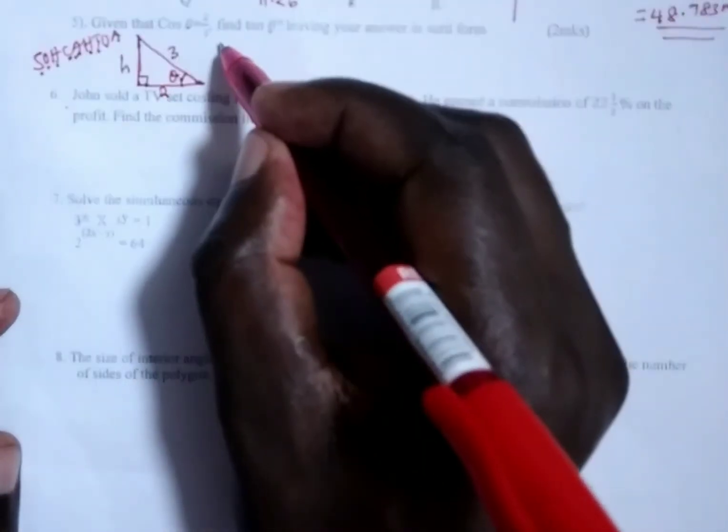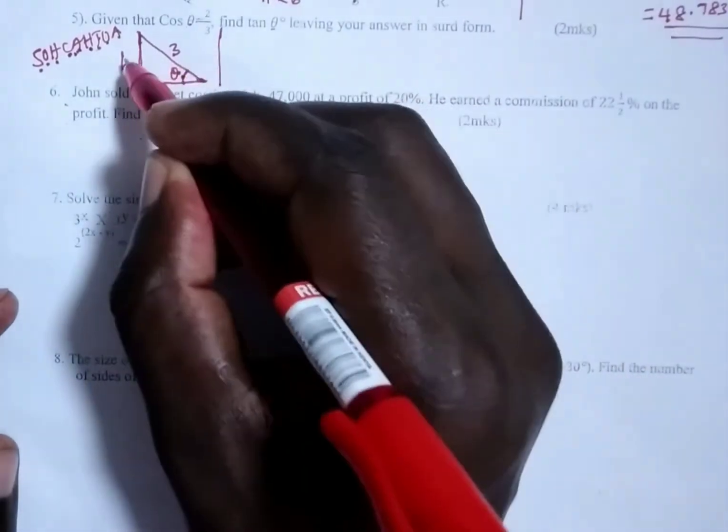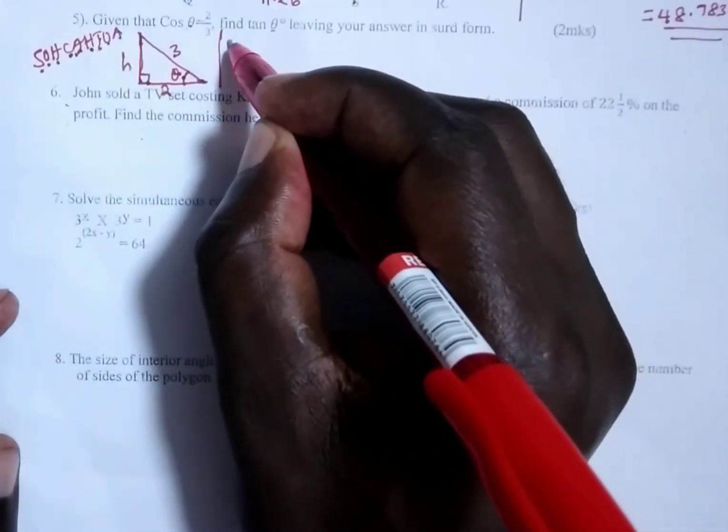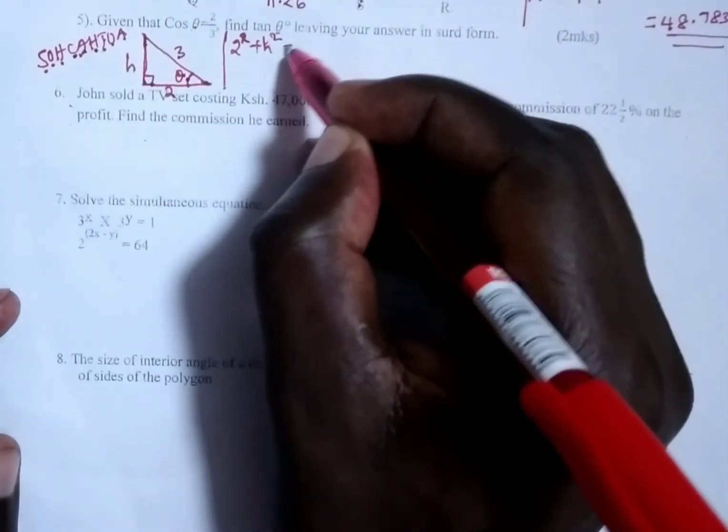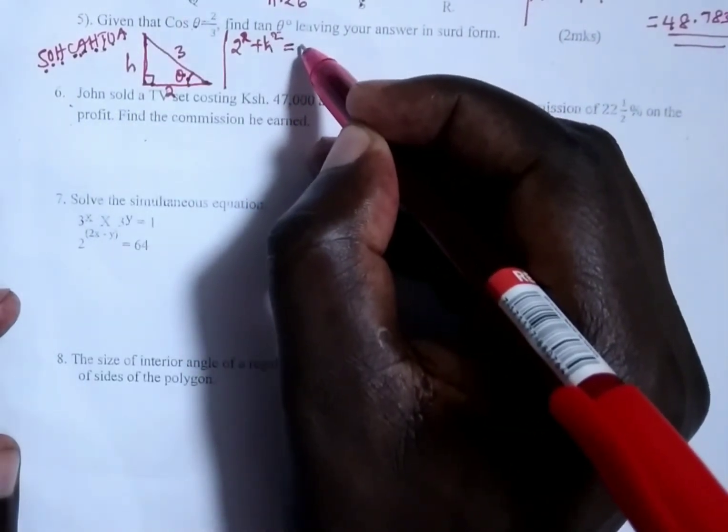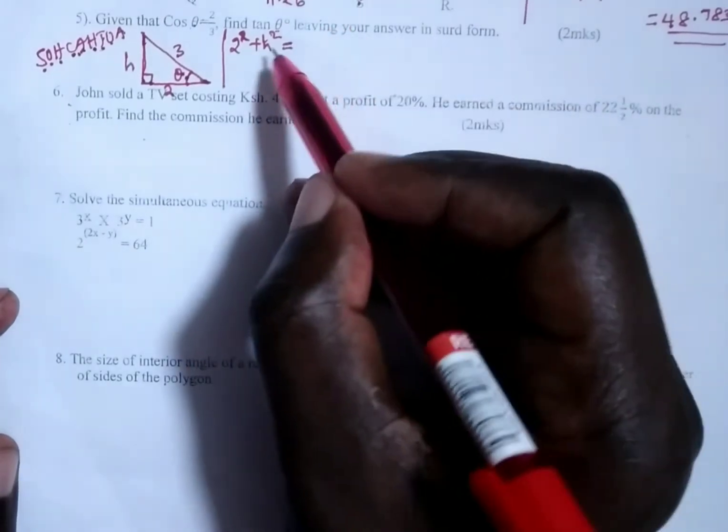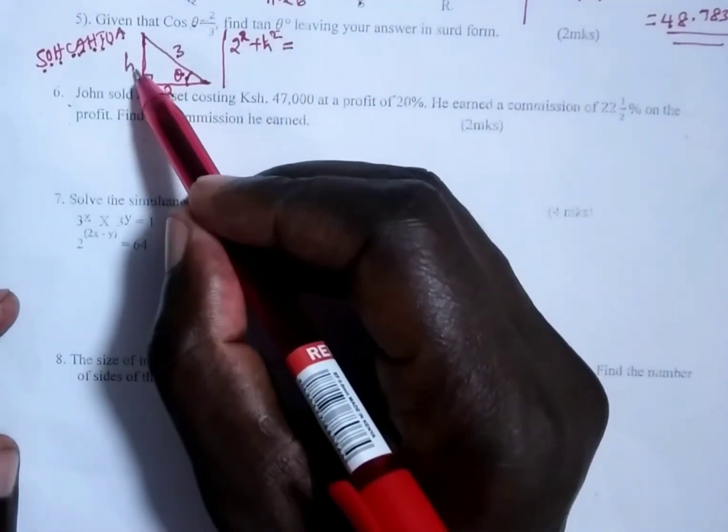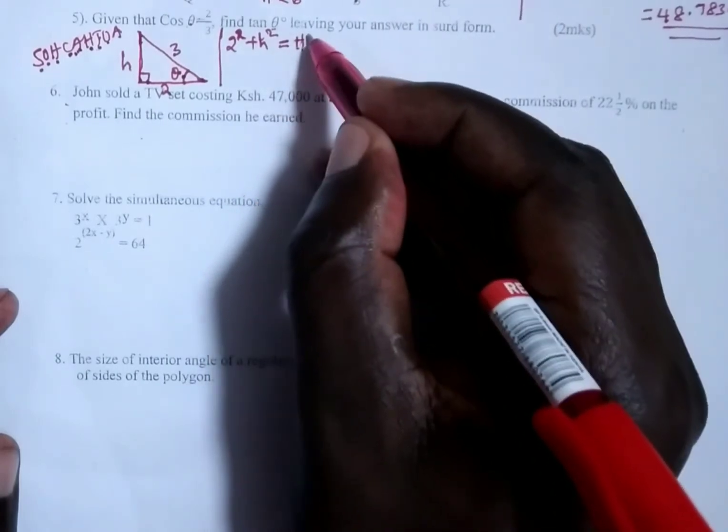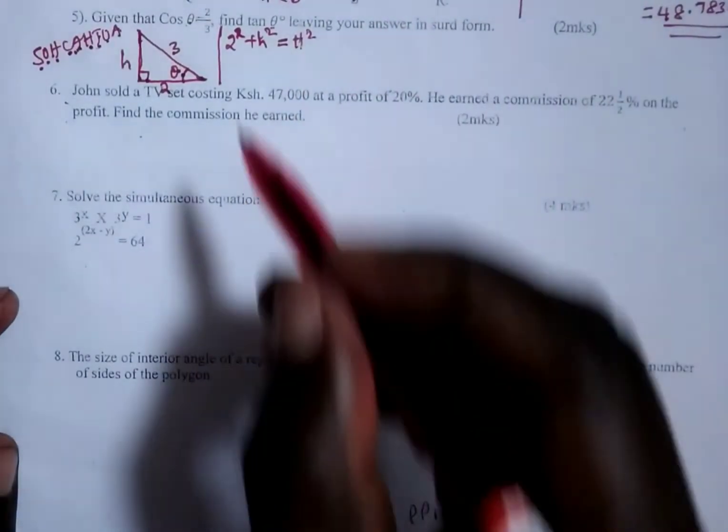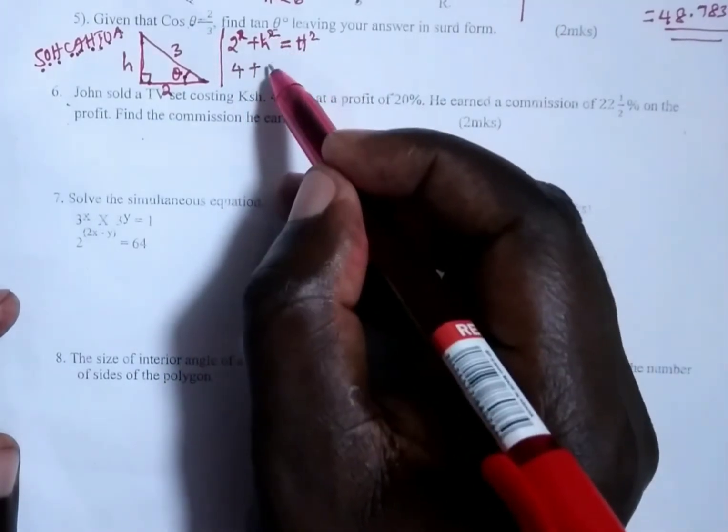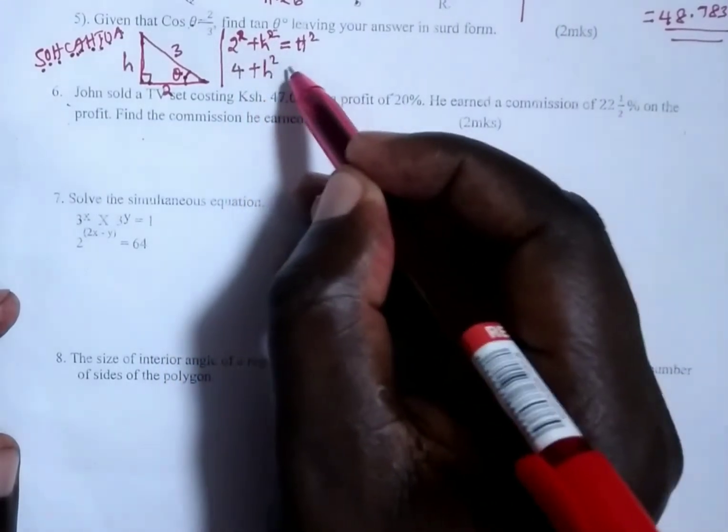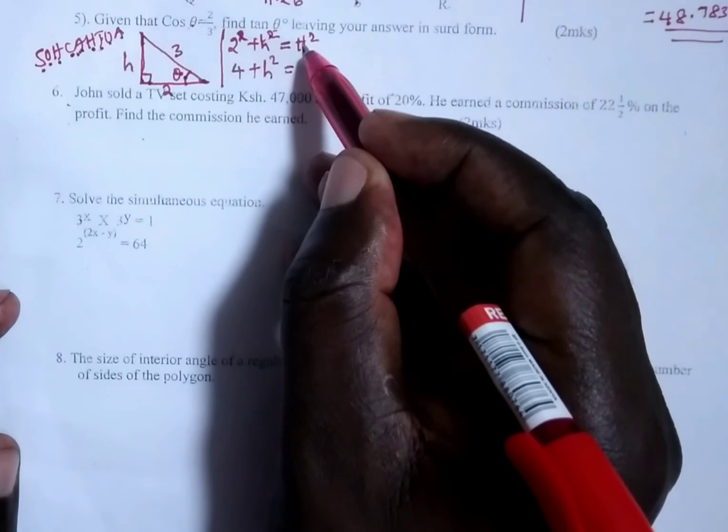Using Pythagoras theorem, we know the base squared plus the height squared will give us the hypotenuse squared. 2 squared will give us 4 plus h², which would remain h², being equal to the hypotenuse squared.